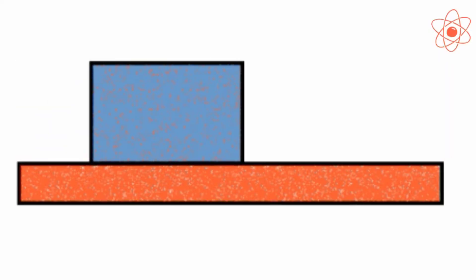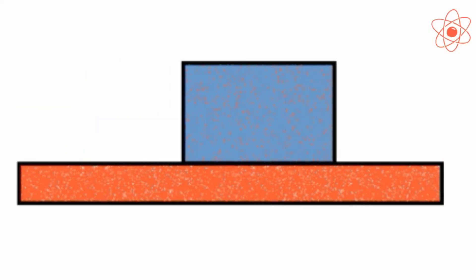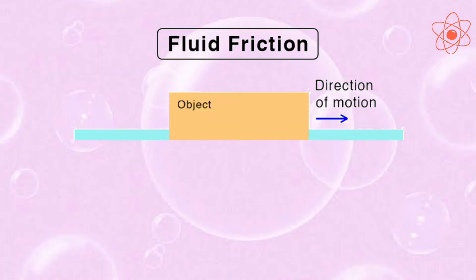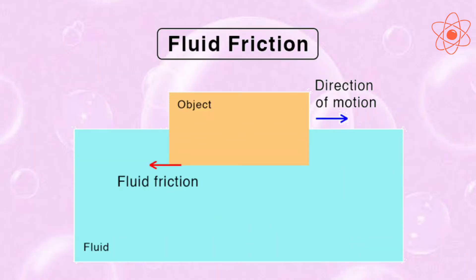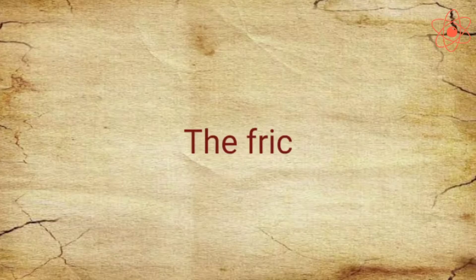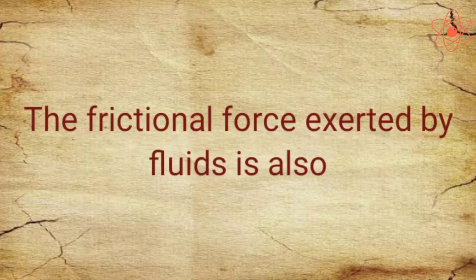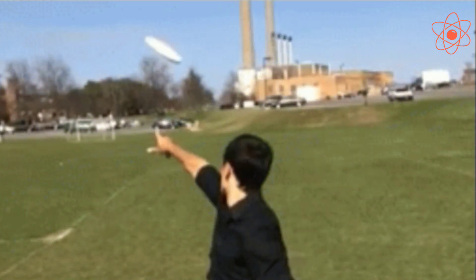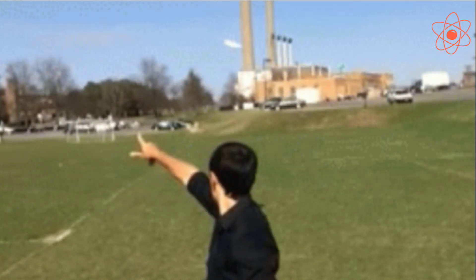You have just studied that all solid surfaces exert friction on solid objects moving over them. Even liquids and gases exert friction on solid objects — this is called fluid friction. However, liquids and gases exert lesser friction compared to solid surfaces. The frictional force exerted by fluids is also called drag.